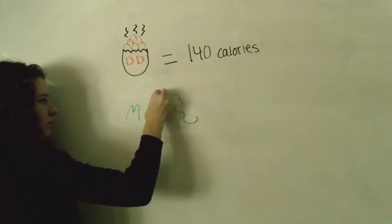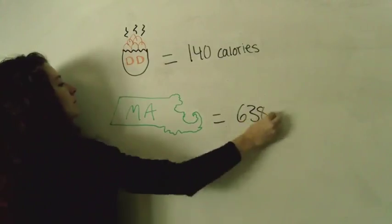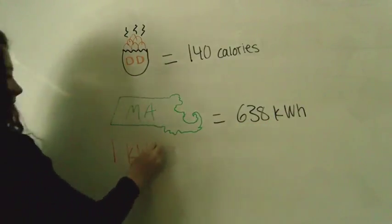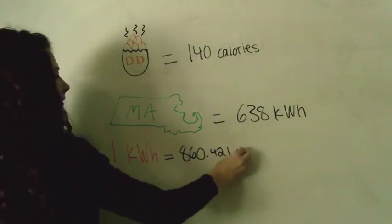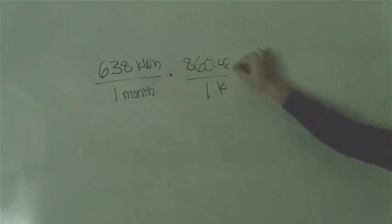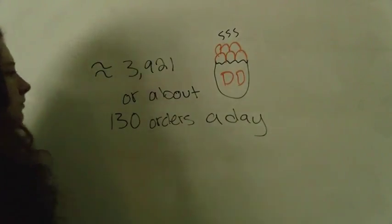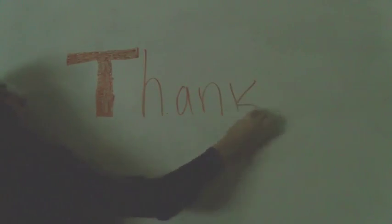One Massachusetts home uses on average 638 kilowatt hours per month. There are 860.421 calories in one kilowatt hour. To do these calculations, we need to multiply the number of kilowatt hours by the number of calories in one kilowatt hour, and then divide by the number of calories in one order of hash browns. It takes approximately 3,921 orders of hash browns to power a Massachusetts home for one month. That's about 130 orders a day.